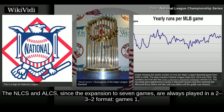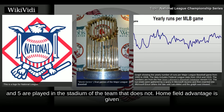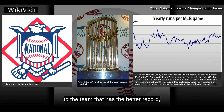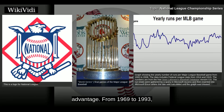Games 1, 2, 6, and 7 are played in the stadium of the team that has home field advantage, and games 3, 4, and 5 are played in the stadium of the team that does not. Home field advantage is given to the team that has the better record, with the exception that the team that made the postseason as the wild card cannot get home field advantage.